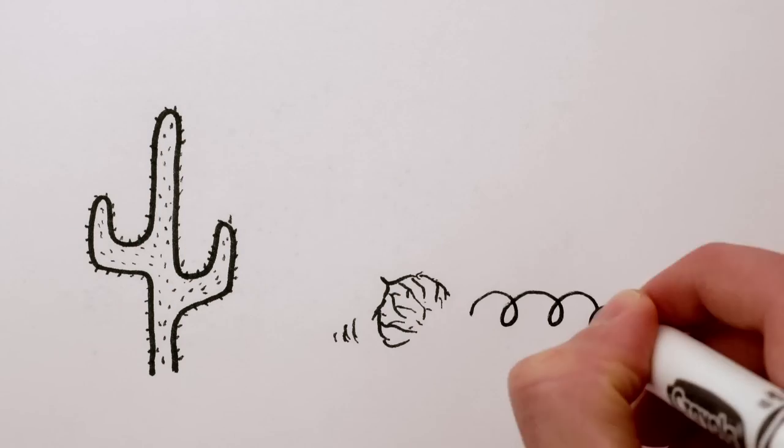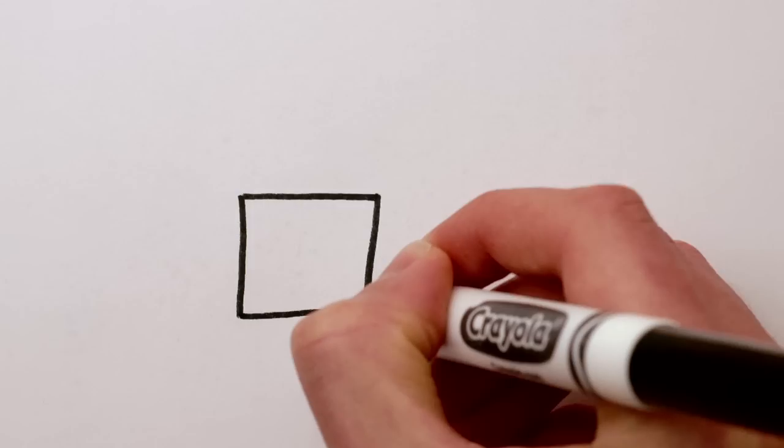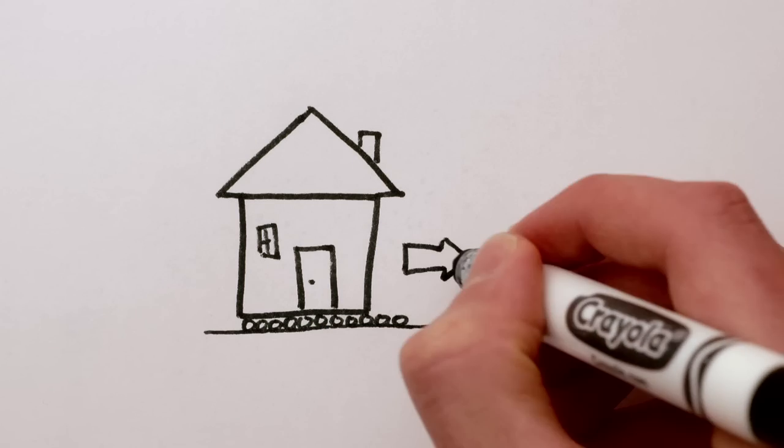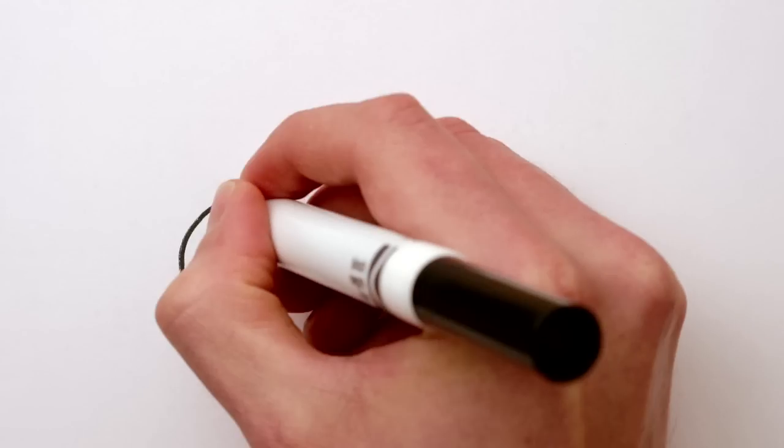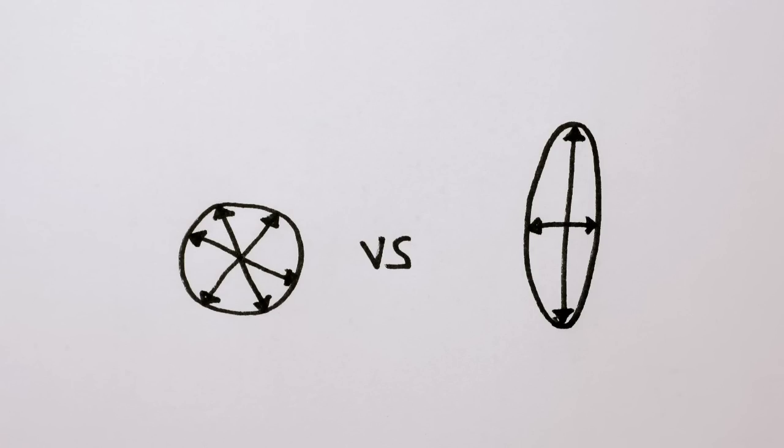But roundness has more to do with rolling than volume, right? A round object can roll smoothly, like a wheel or ball bearing, and the main feature that ball bearings need is to be the same width from one side to the other.